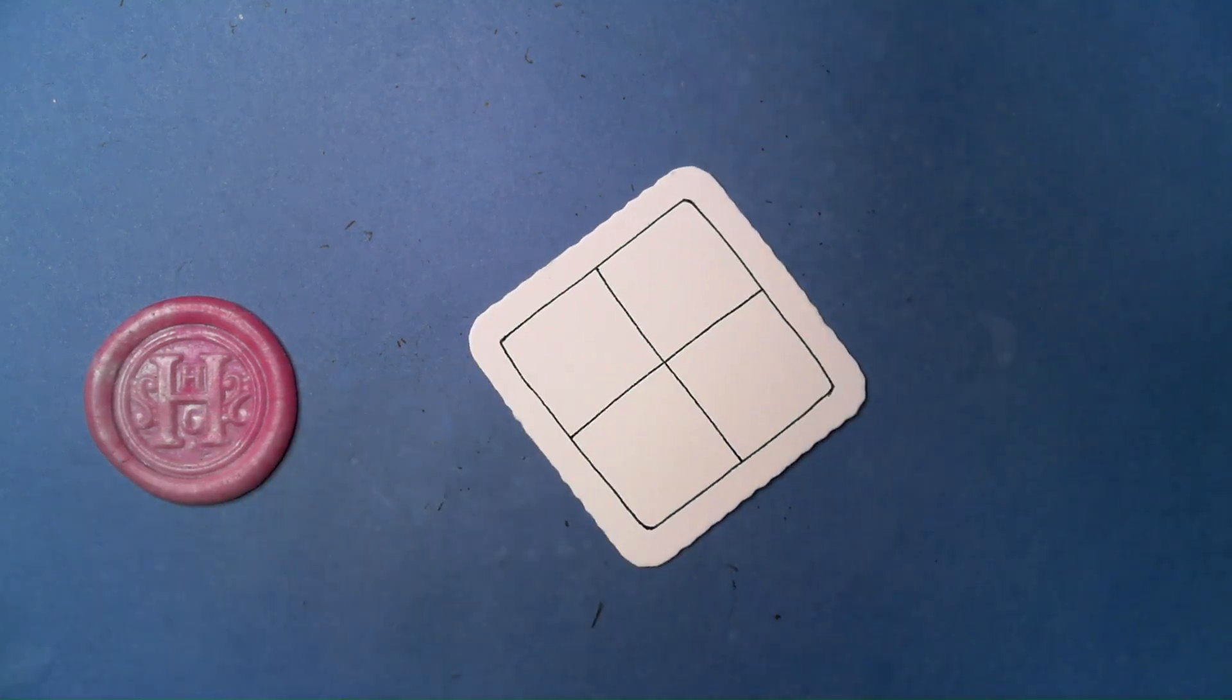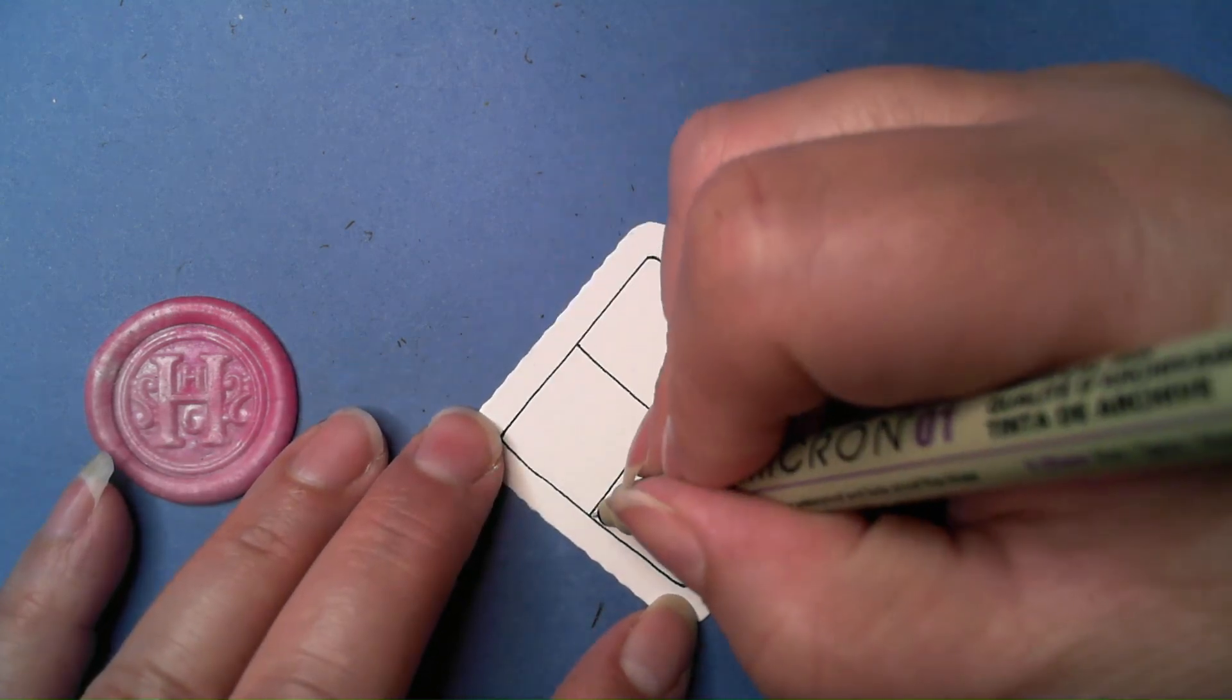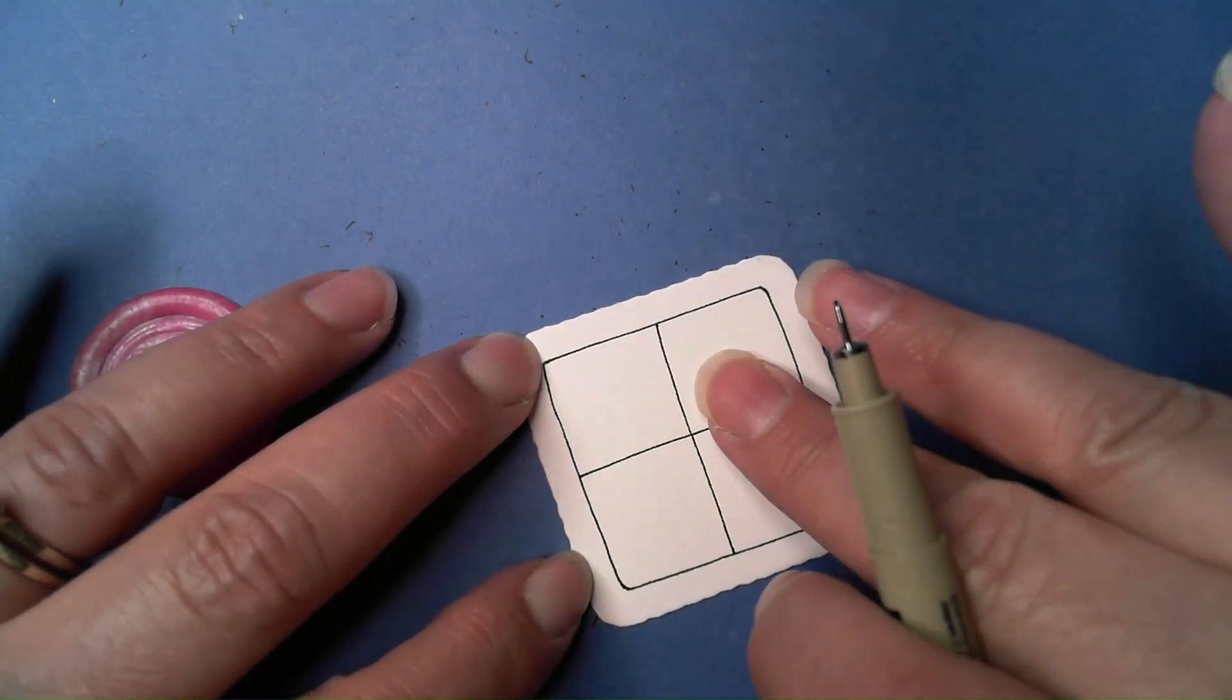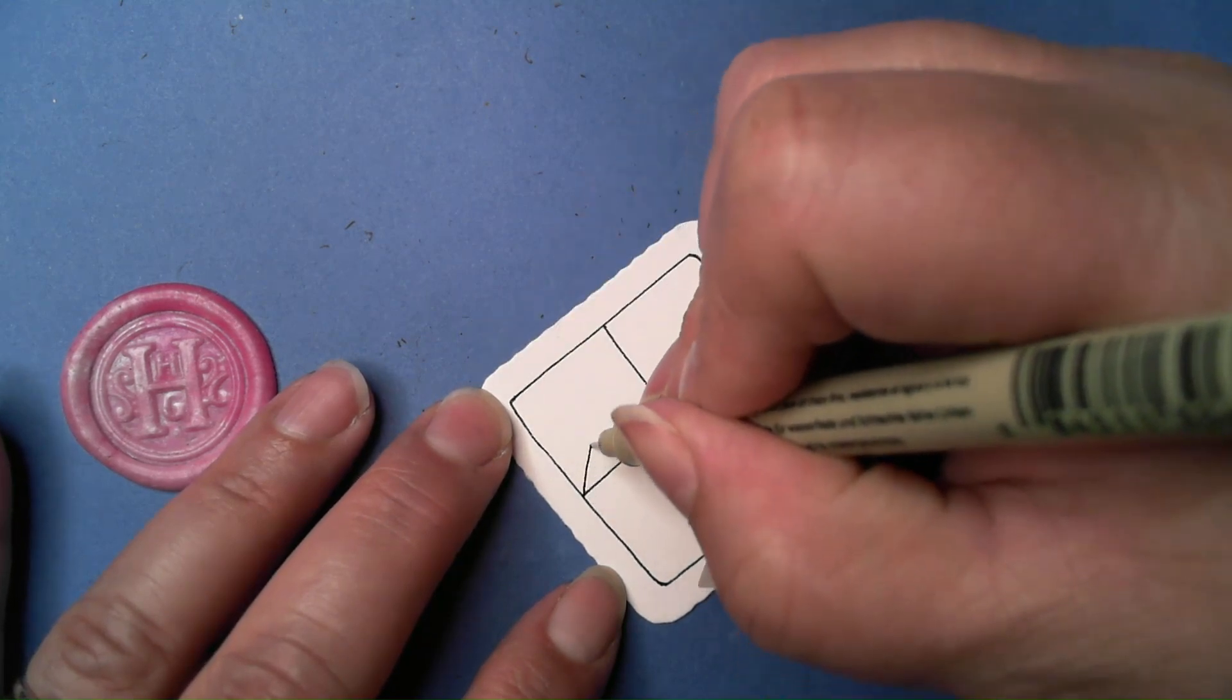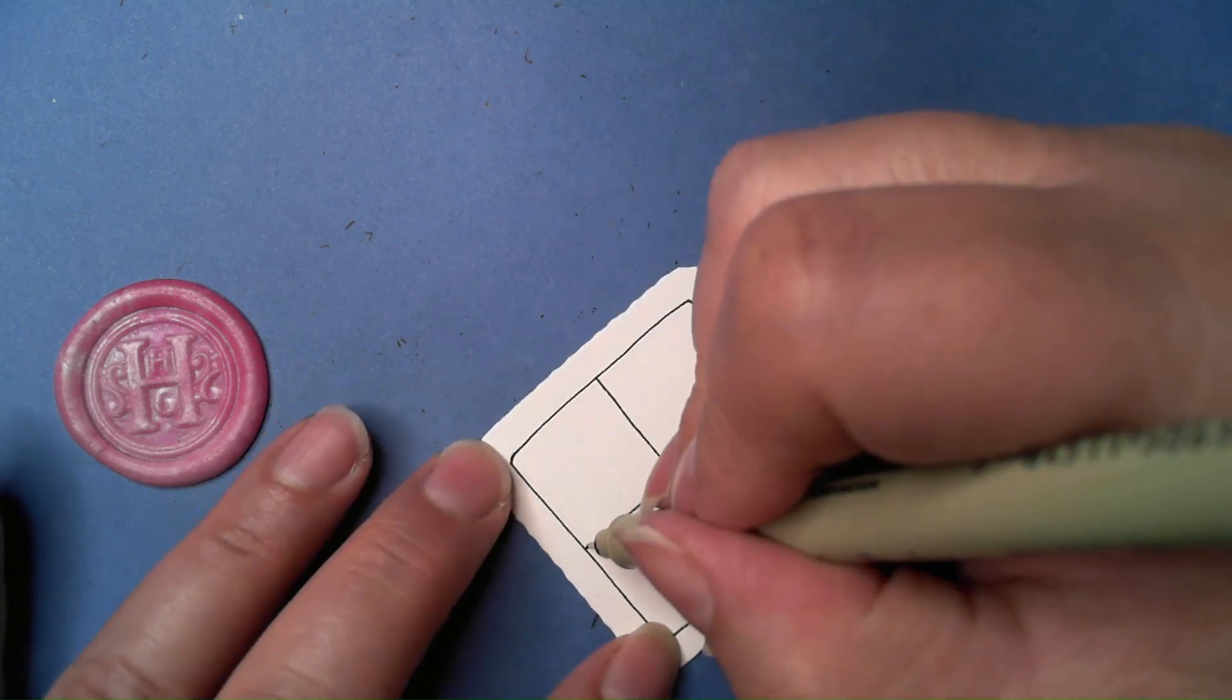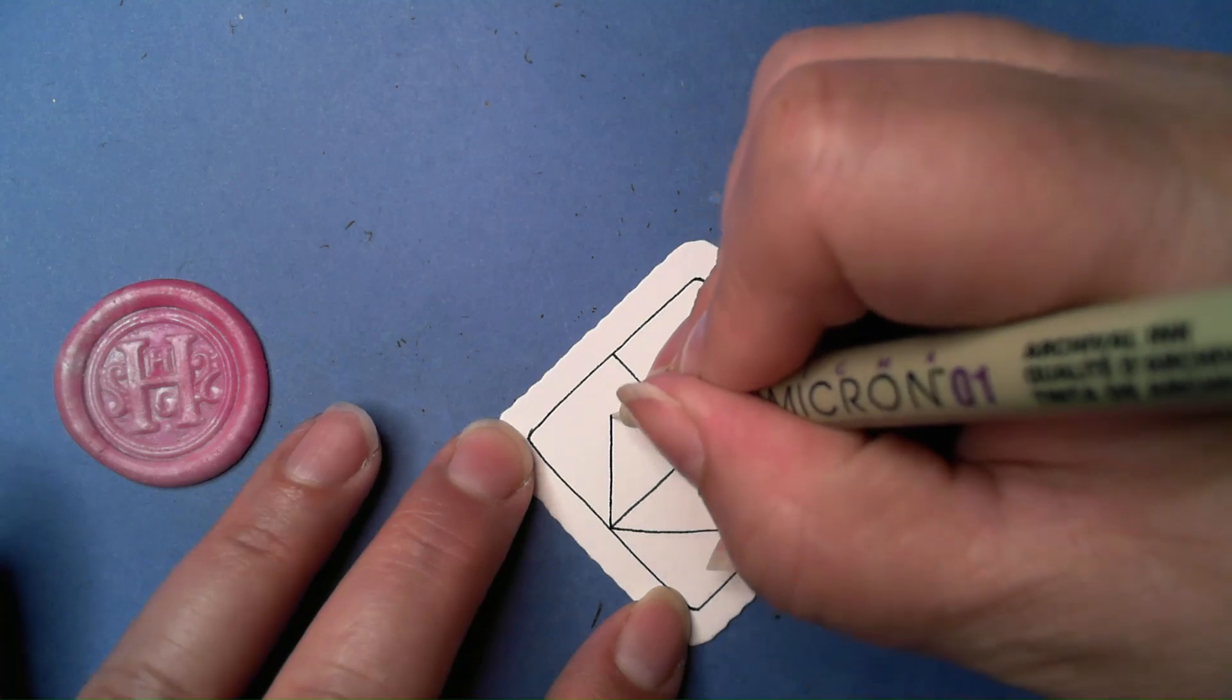Once you have your grid set, we're going to do some diagonal lines. We're going to essentially create a diamond on the inside, so I'm going from the lower left to the upper right like so. Then it's just as easy as turn your tile and do the same thing over and over again until you're done.